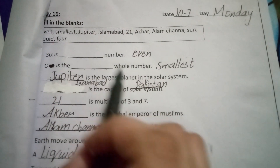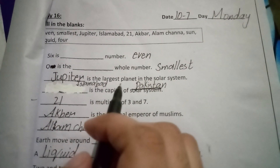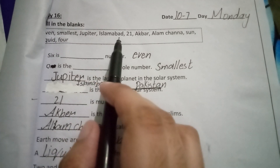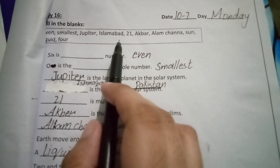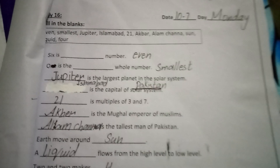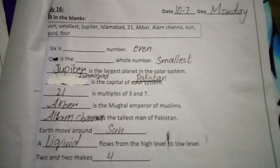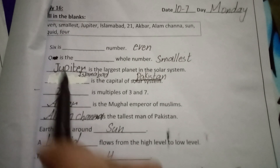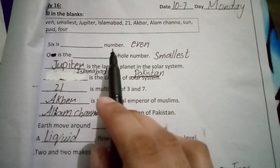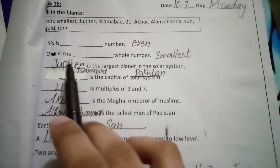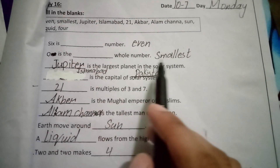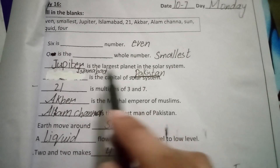Fill the blanks. You have to fill the blanks. First: 6 is the dash number — 6 is the even number. 0 is the dash whole number — 0 is the smallest whole number.